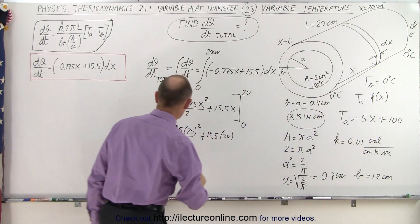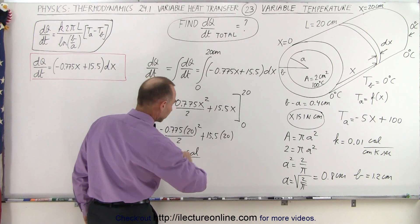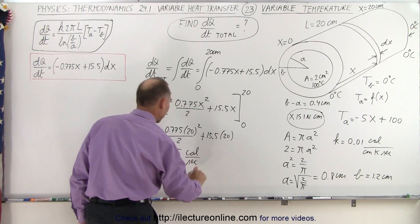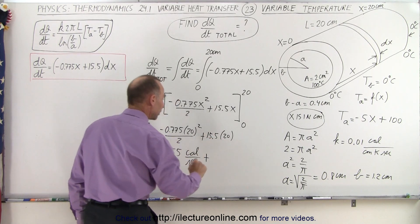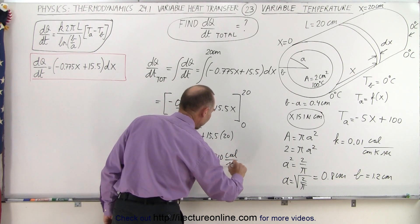We had this in terms of calories, so it would be calories per second. And then plus, we multiply this, we get double that, that would be 310 calories per second.